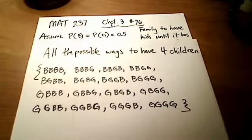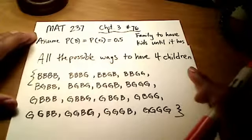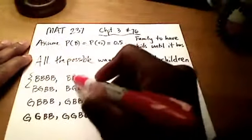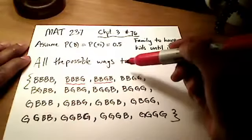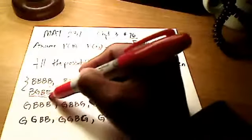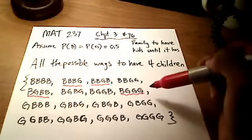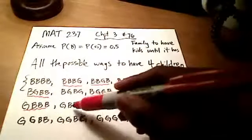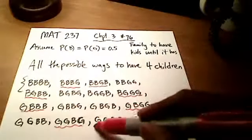Which of these have exactly three children with the same gender? I'll underline them in red. I'm looking for exactly three — not four. Counting through the 16 outcomes: this one has exactly three boys, this one also has three boys. That one has two boys and two girls — skip it. Continuing through, I find outcomes with exactly three of the same gender.